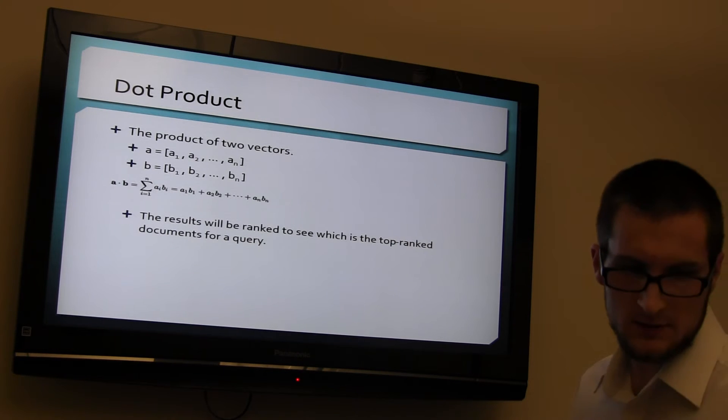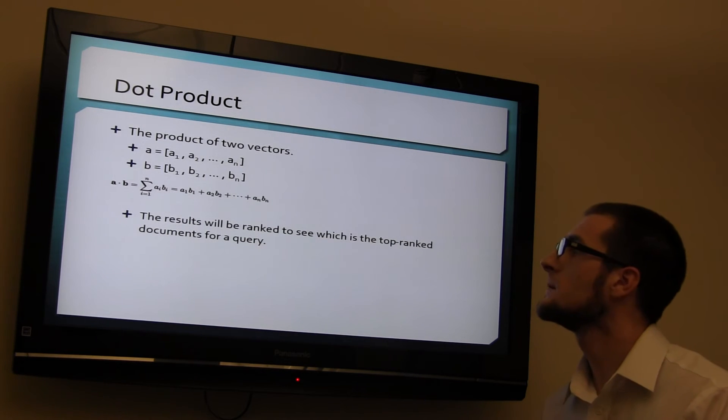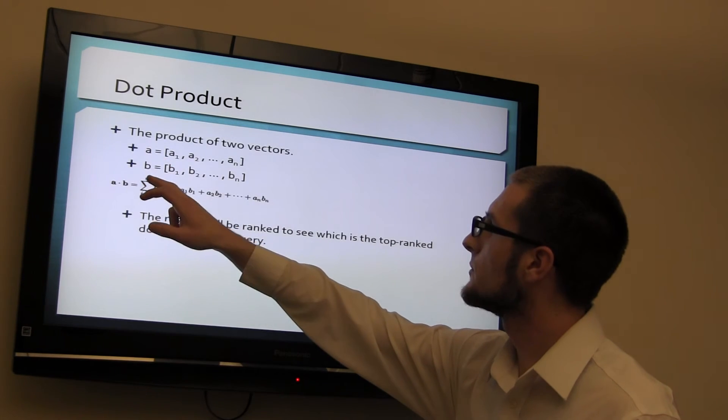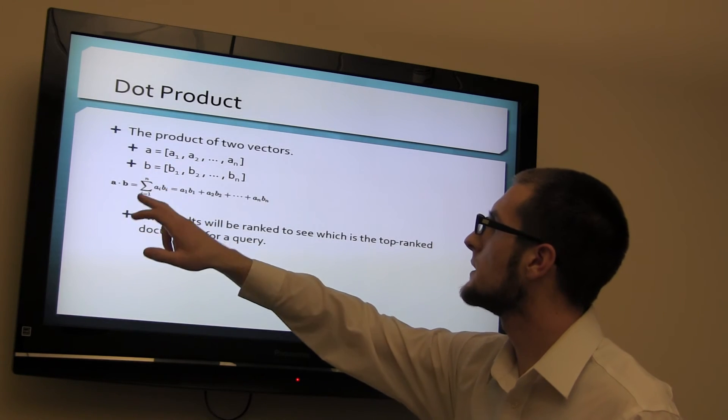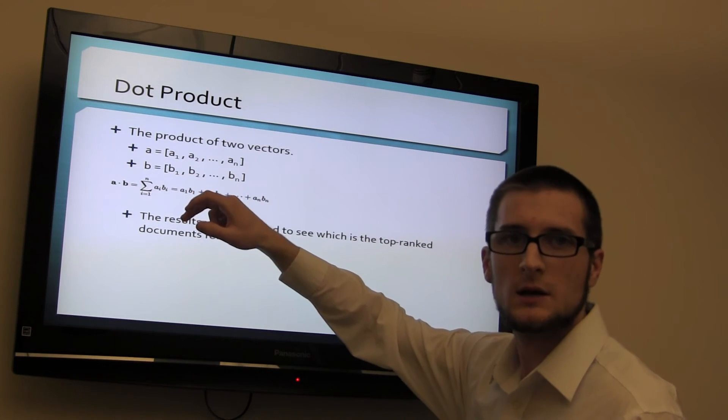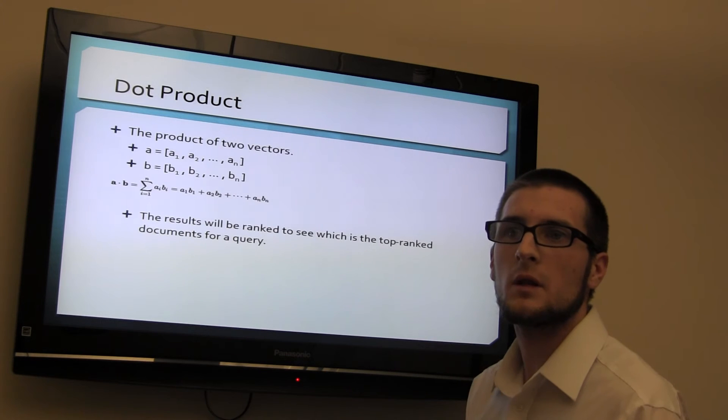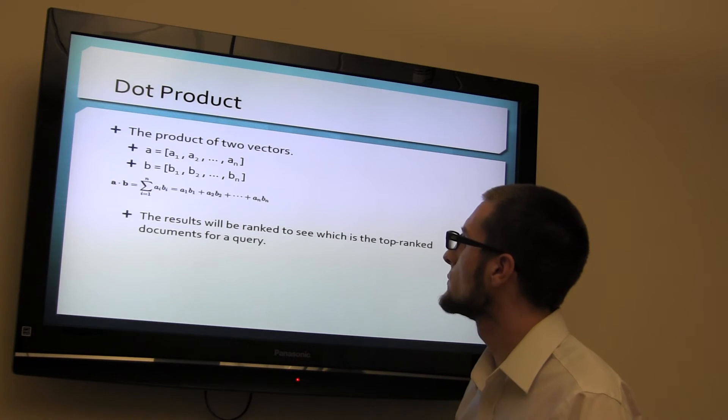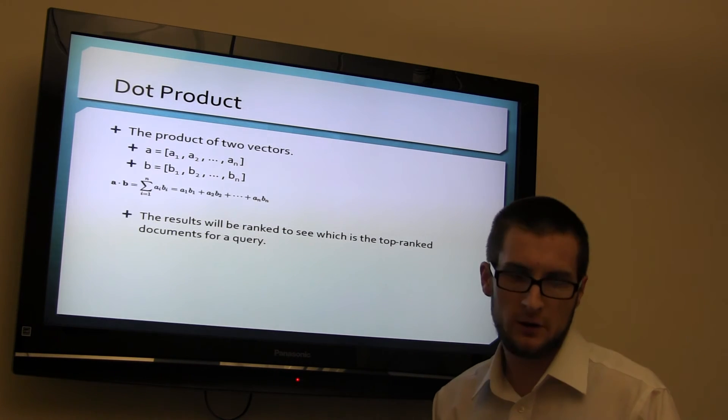The dot product is very easy to find once you know how to do it. It's a product of two vectors. So you have vector A and vector B, or document A, document B. Wherever they intersect and have like terms, it's going to be where they're going to be the same. The results will be ranked to see which is the top-ranked documents for a query.